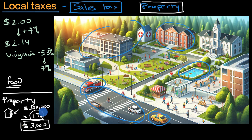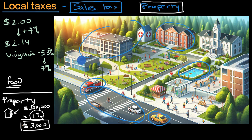Hopefully this gives you a sense of where the government gets its money. These local taxes — sales and property tax — you add to that things like income tax at the federal or state level, and you have a good picture of how the government, for the most part, funds itself.